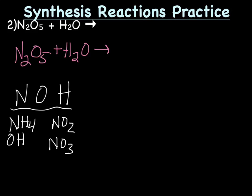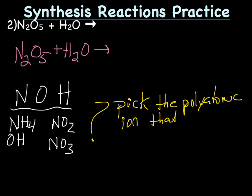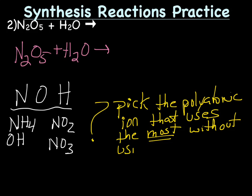So the question now is, how do you pick? How do you know which one to use? Well, to pick a polyatomic, you want to pick the polyatomic ion that uses the most atoms without using more than you have. So what we do, start with the NH4. NH4 has one N, and we have two N's available, so that would be fine, and four H's. However, we only have two H's available, which means NH4 is out.